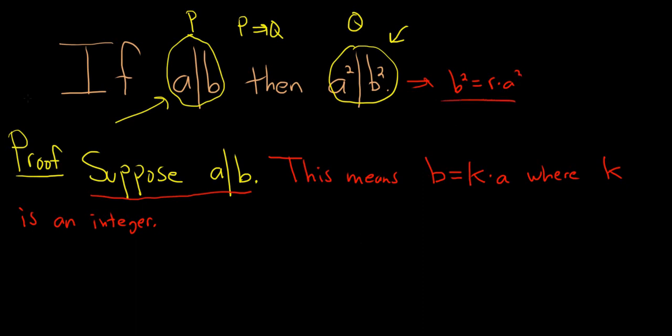So it makes sense now to start by looking at b squared. So now, b squared is equal to parentheses k a squared. That's because b is equal to k a. Then you can just square each factor. So k squared a squared.